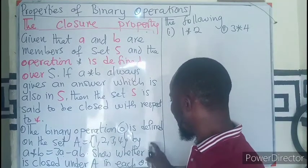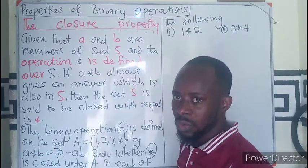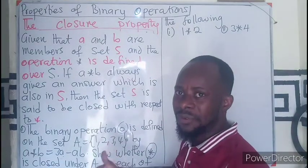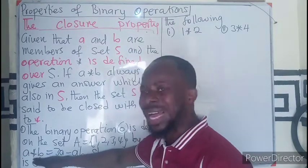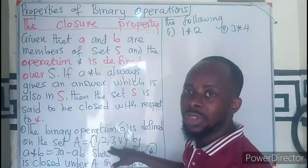We have to show whether the operator is closed under the set A, meaning every element we operate under this definition will always belong to {1, 2, 3, 4}.